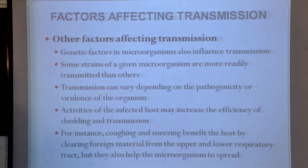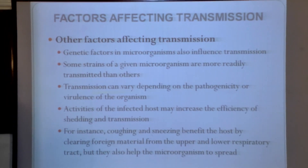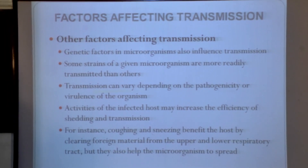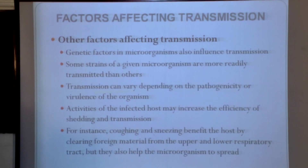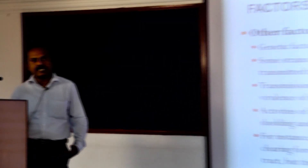Apart from these three main factors, there are other factors which can also affect transmission. For example, the genetic characteristics of an organism. Some organisms are naturally resistant and able to cause infection — they are called virulent pathogens, or they will have higher pathogenicity. But some organisms will not have that much virulence or pathogenicity, so their transmission will not be at an appreciable level.